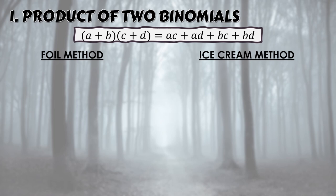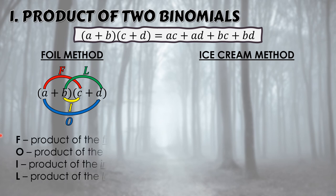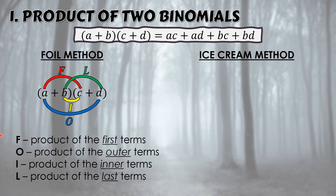For the FOIL method, given two binomials (a + b) and (c + d), we multiply: F — first terms, a times c; O — outer terms, a times d; I — inner terms, b times c; and L — last terms, b times d. FOIL stands for: F = product of the First terms, O = product of the Outer terms, I = product of the Inner terms, L = product of the Last terms.